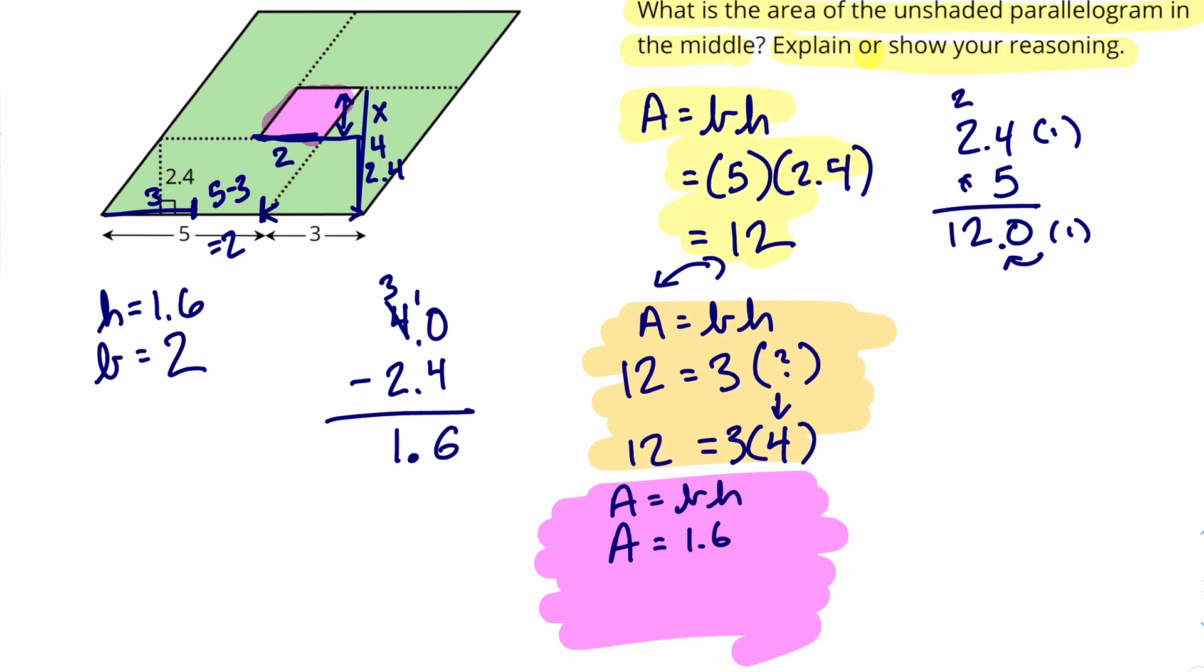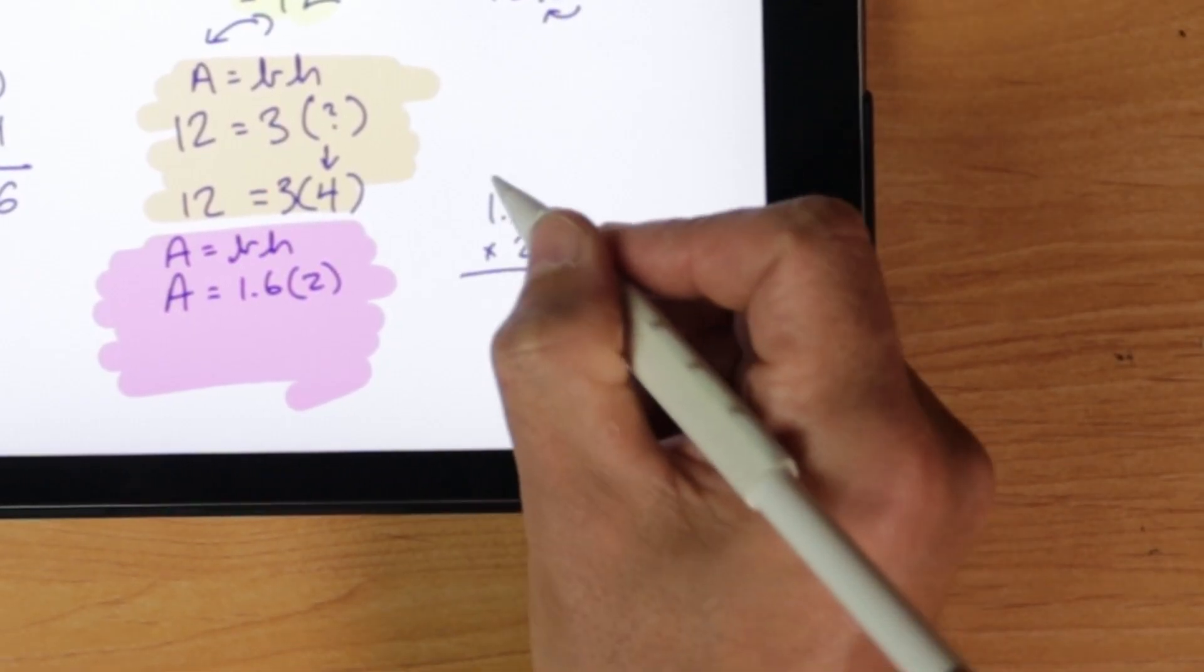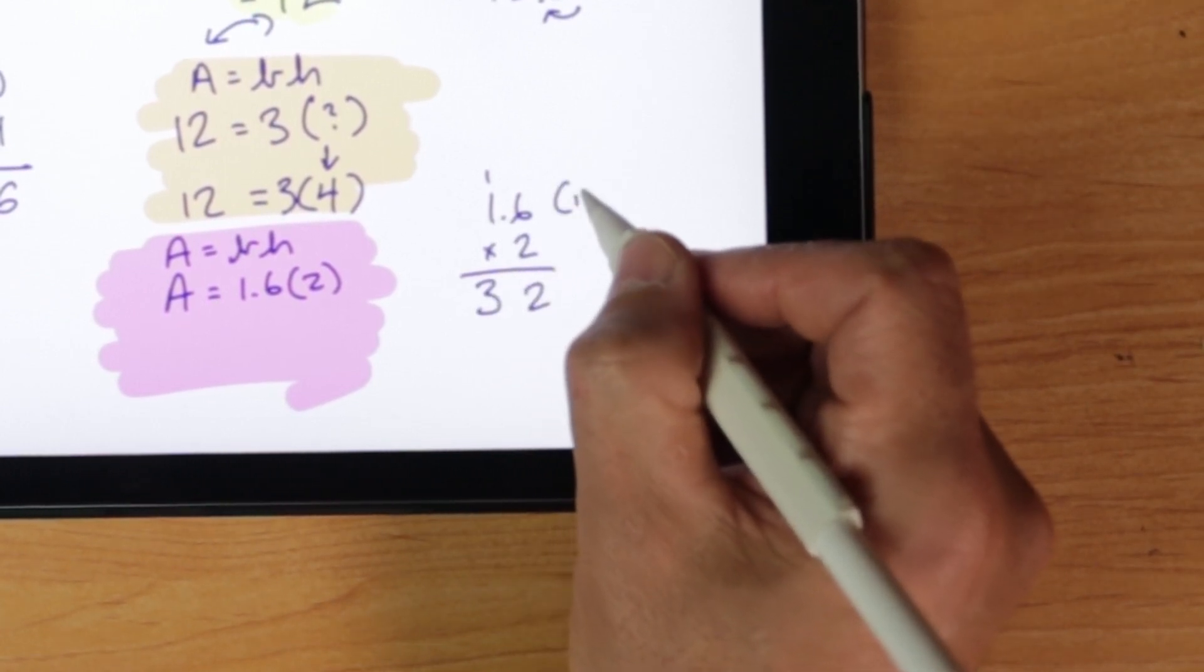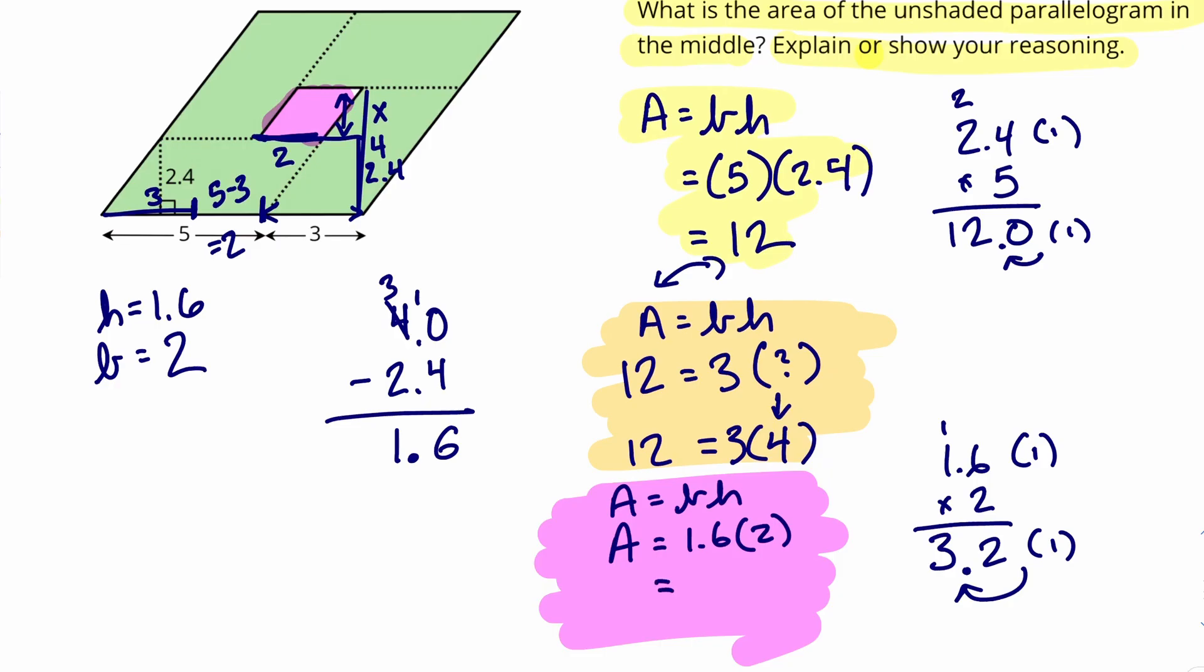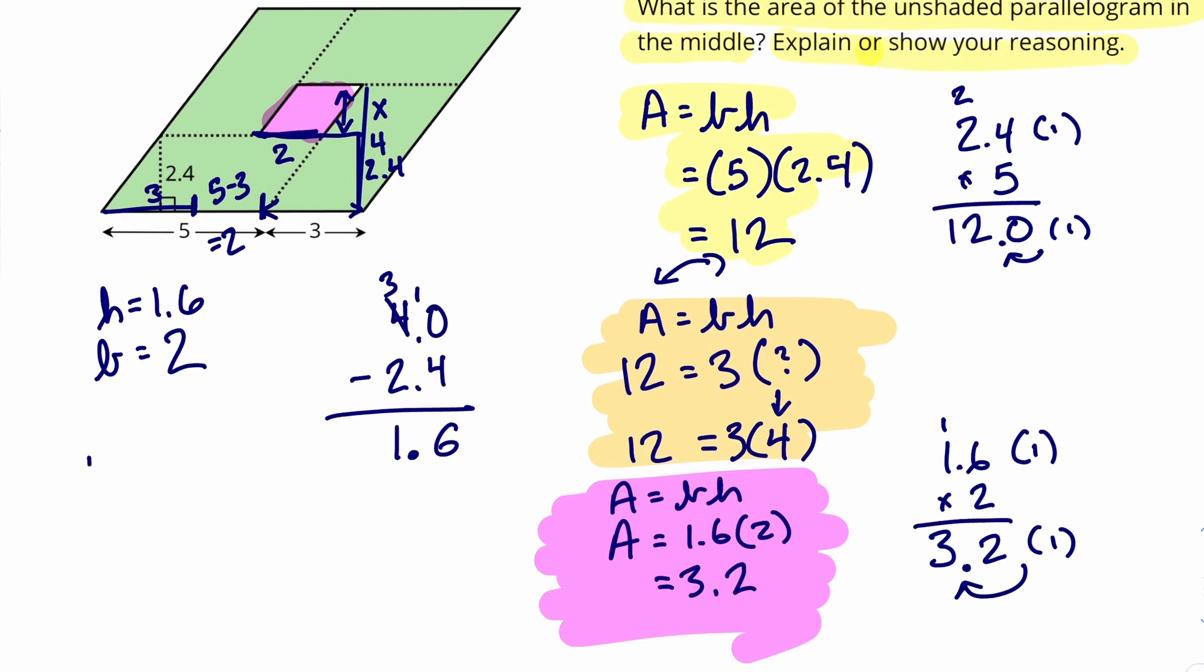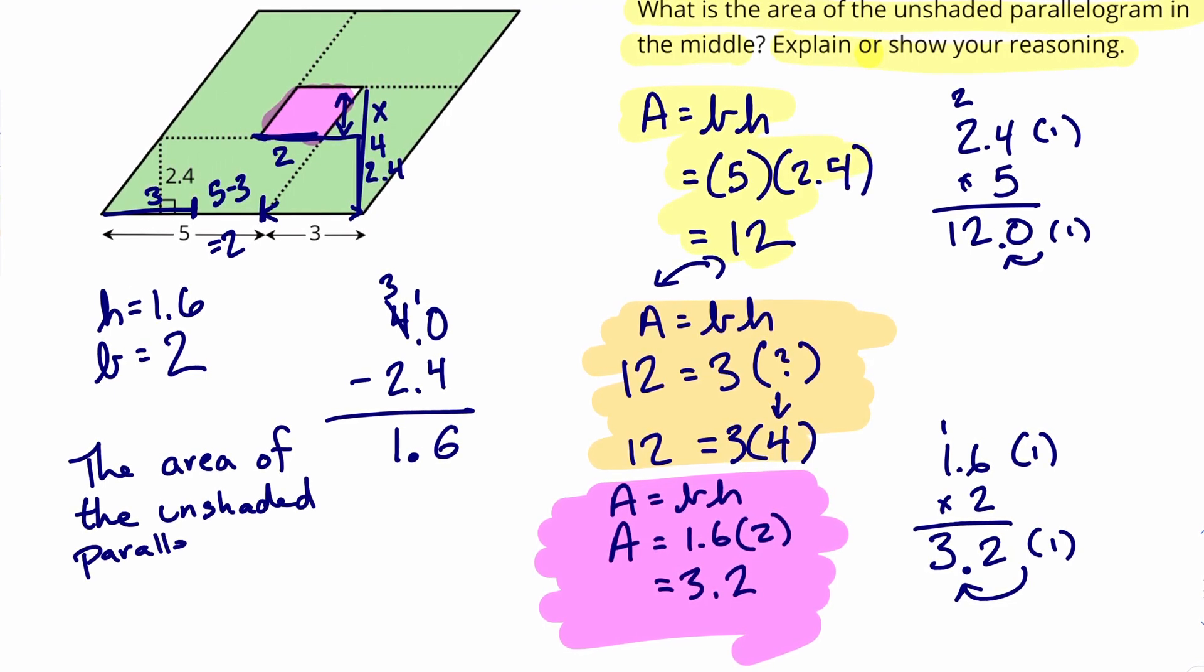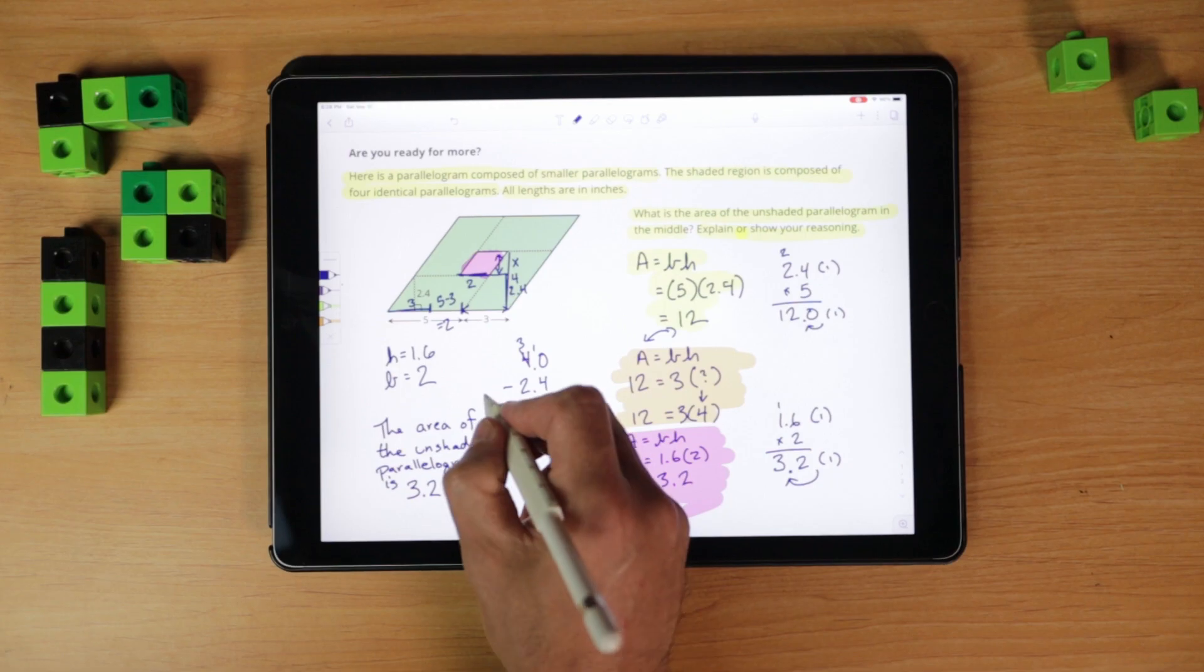We're going to take the base of 2 and multiply it by 1.6. It's going to be 3.2. So we can conclude that the area of the unshaded parallelogram is 3.2 square inches.